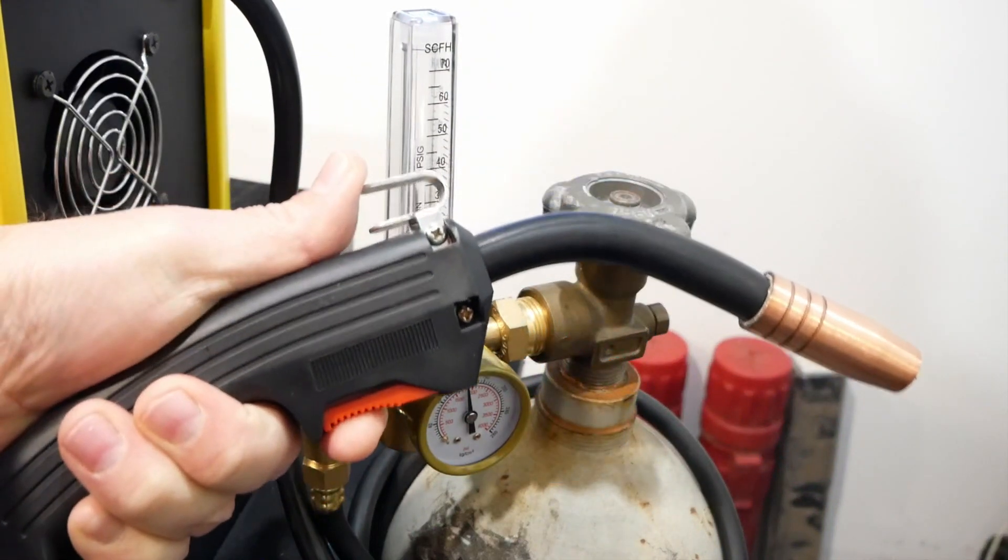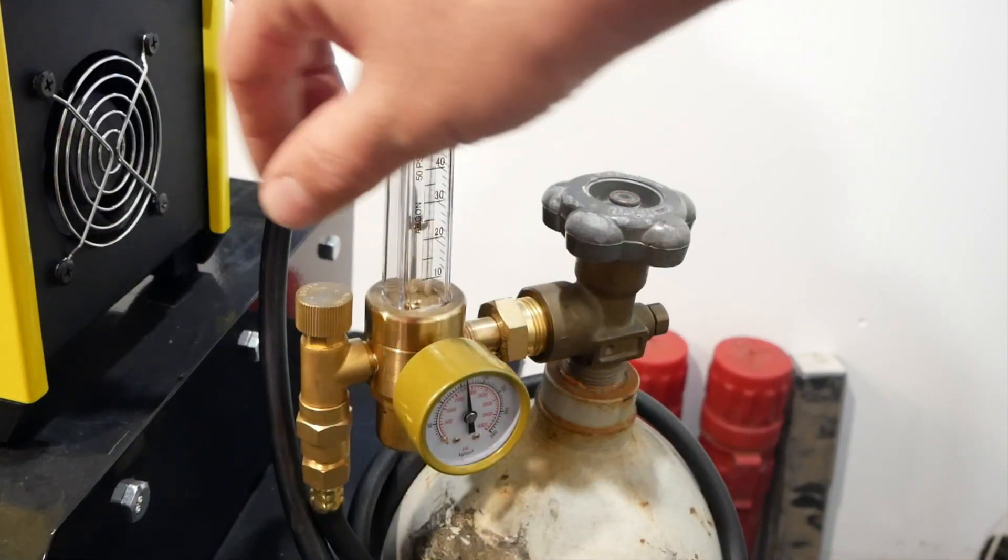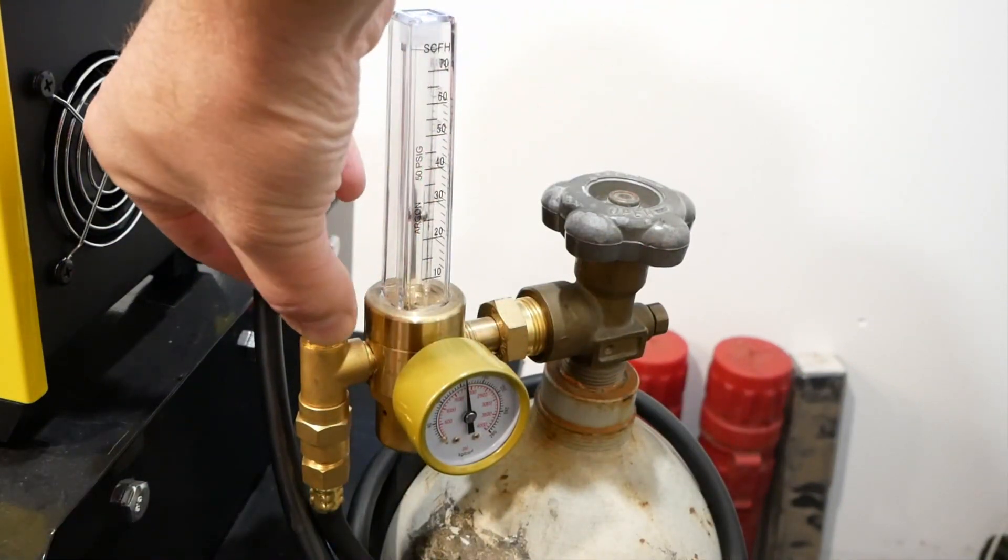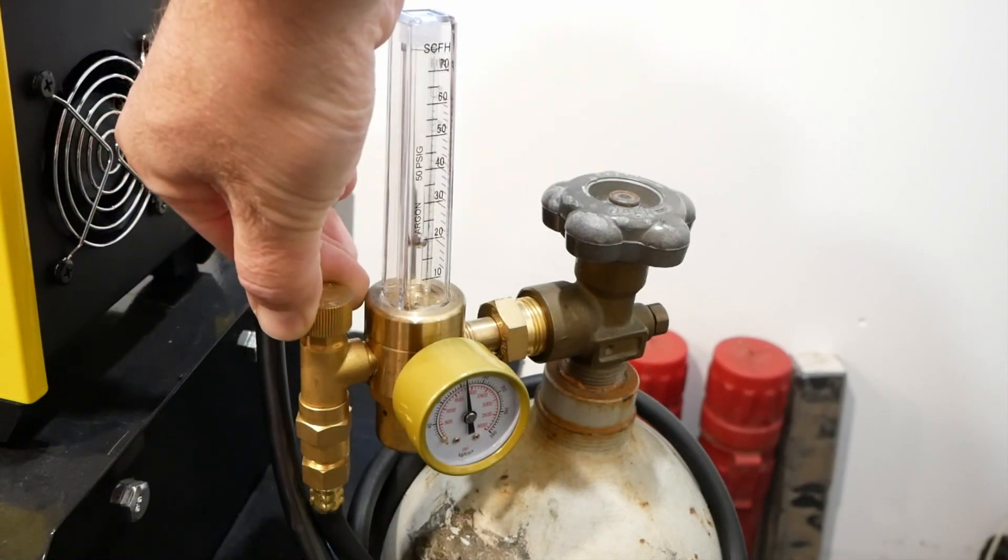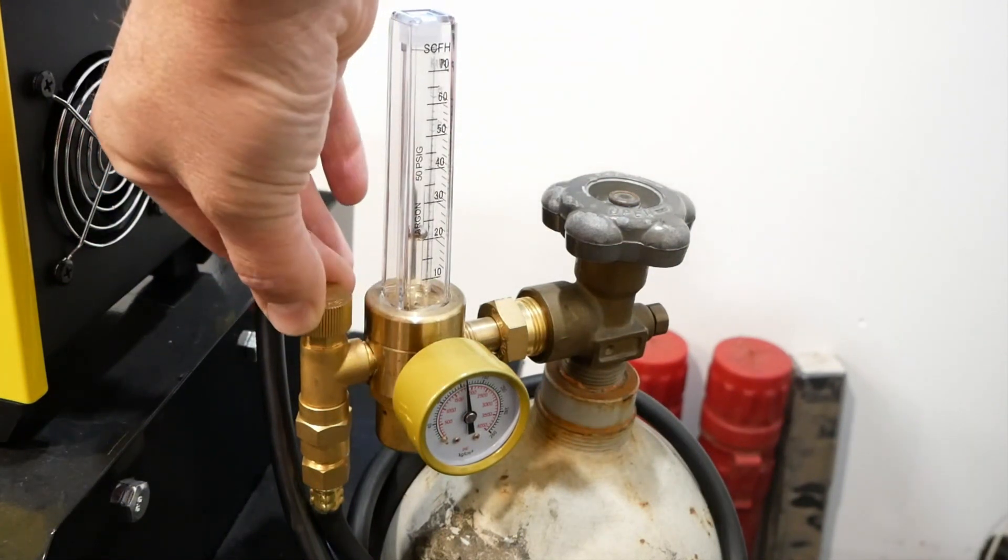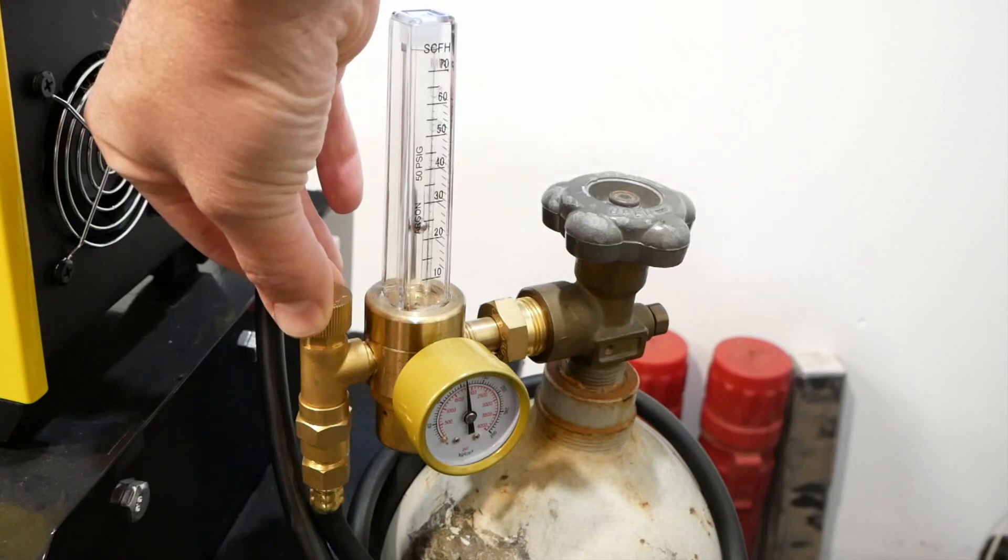With the machine energized, squeeze the trigger on the MIG gun. This will open the solenoid valve and start the flow of gas. We use the brass screw on the flow meter to adjust the flow rate. I'm going to set mine at 20 cubic feet per hour.